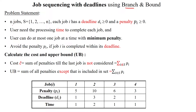The problem statement: n number of jobs are given, stated as 1 to n. Each job i has a deadline greater than or equal to 0 and a penalty pi greater than or equal to 0. The branch and bound technique is a minimization problem, so instead of profit we will use the penalty.